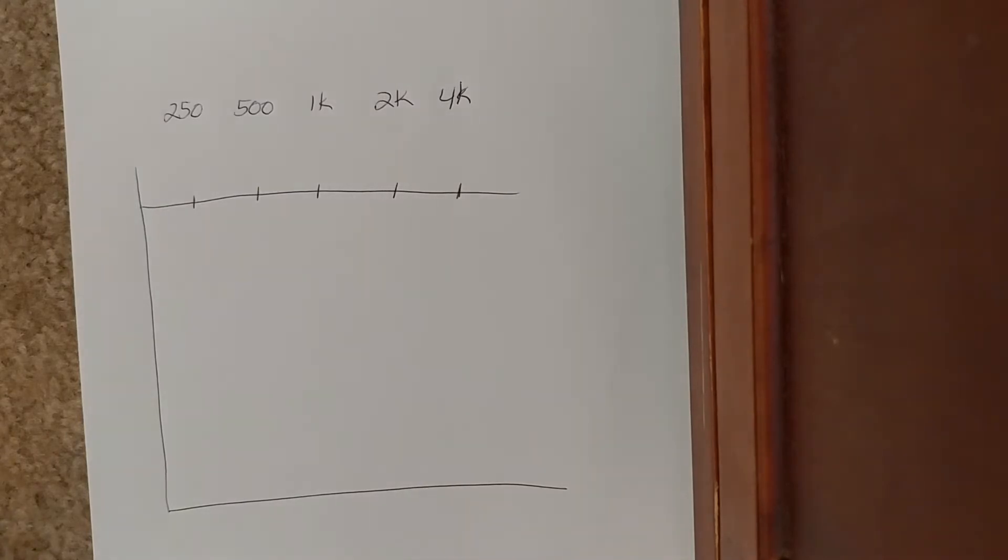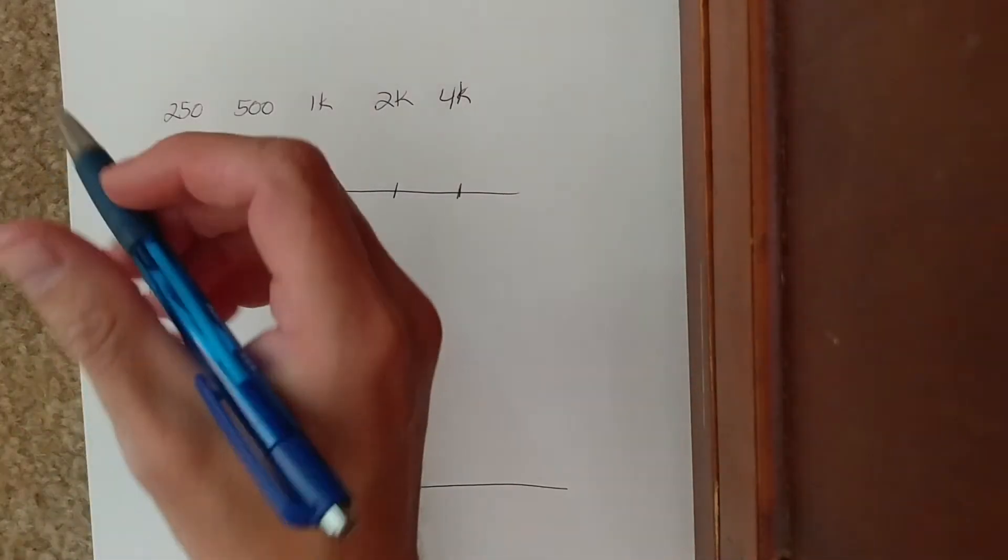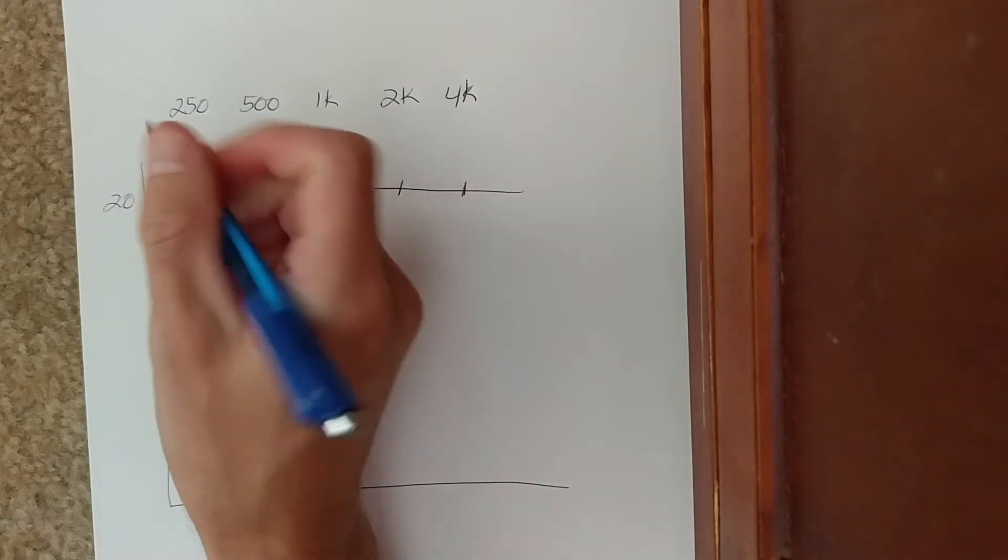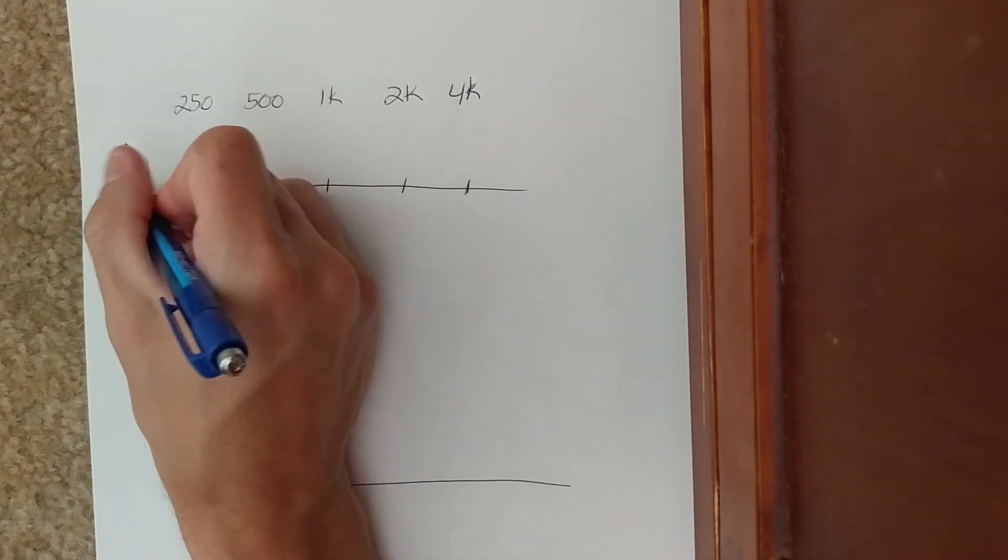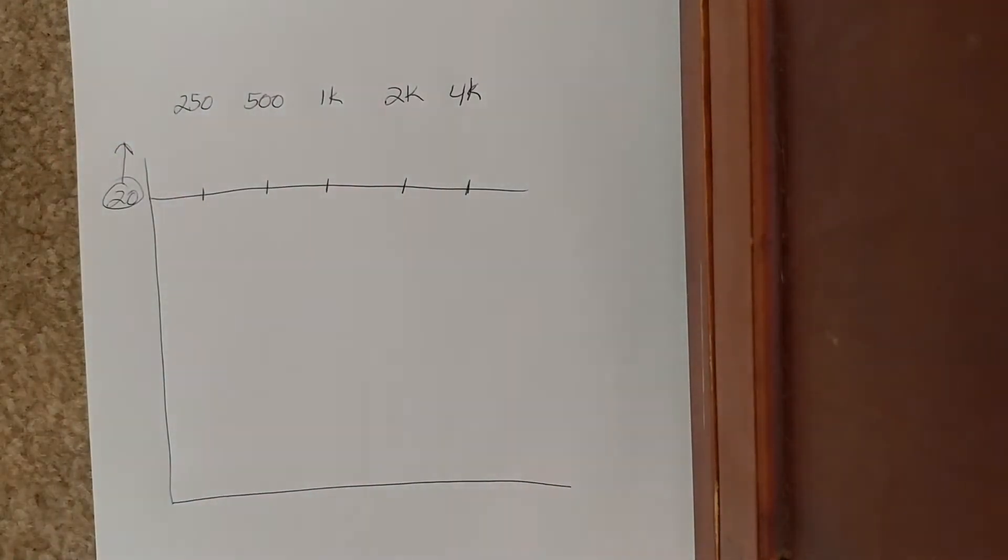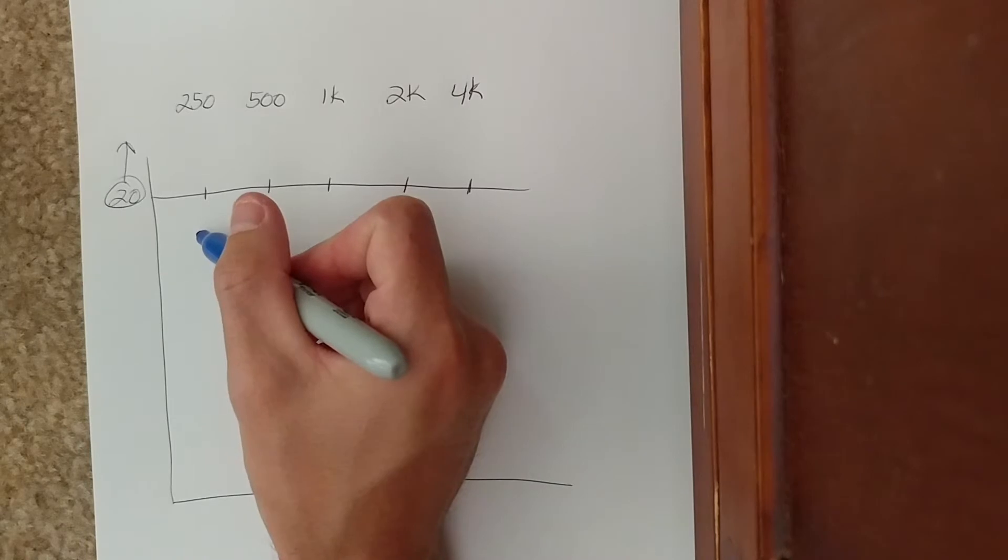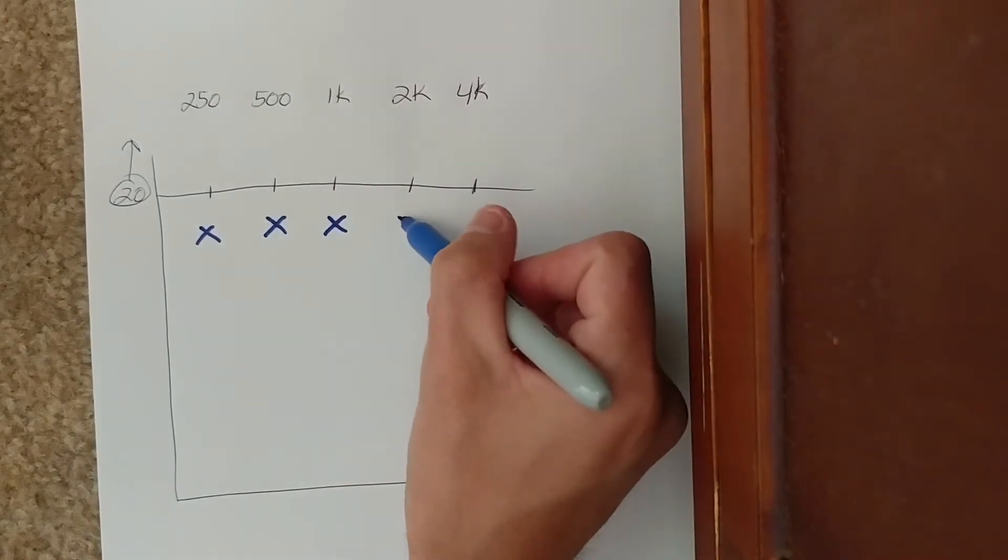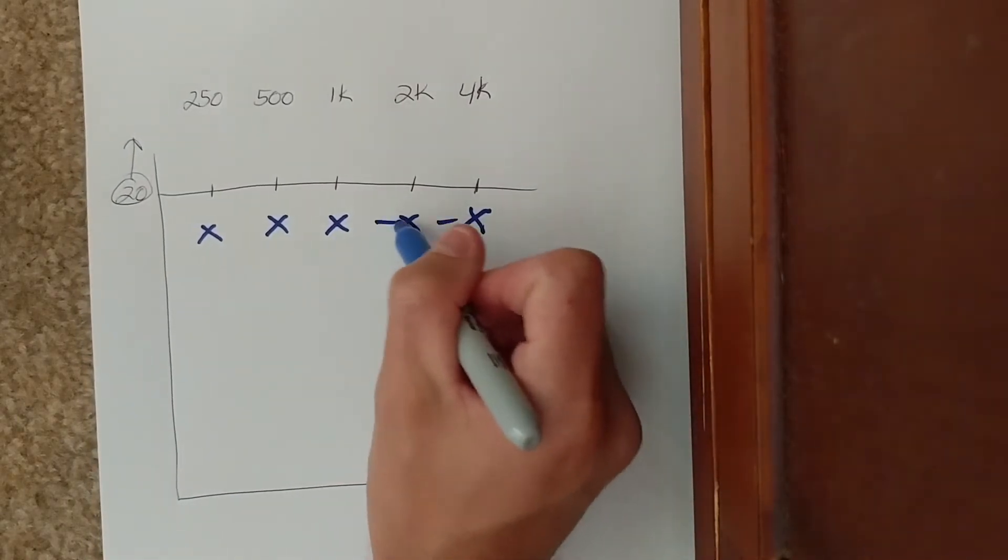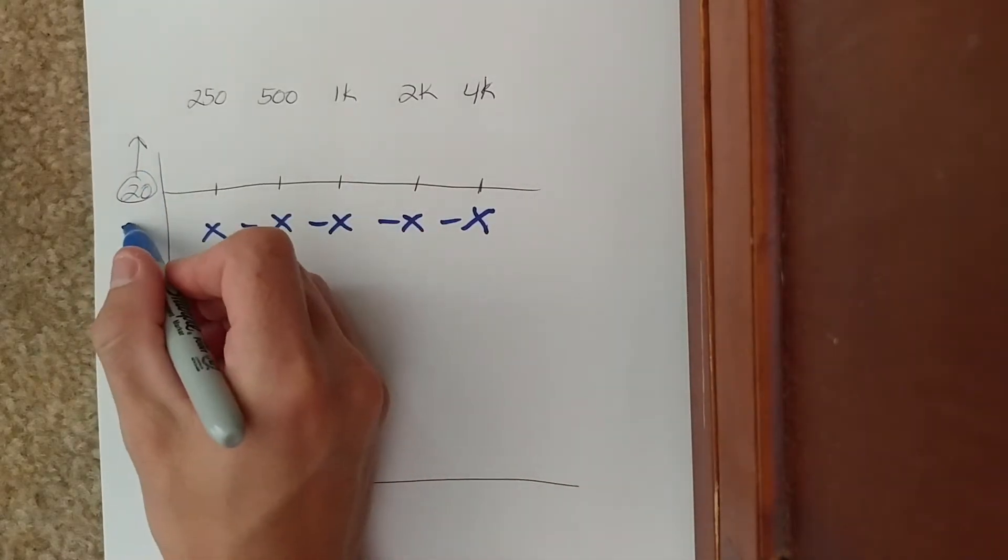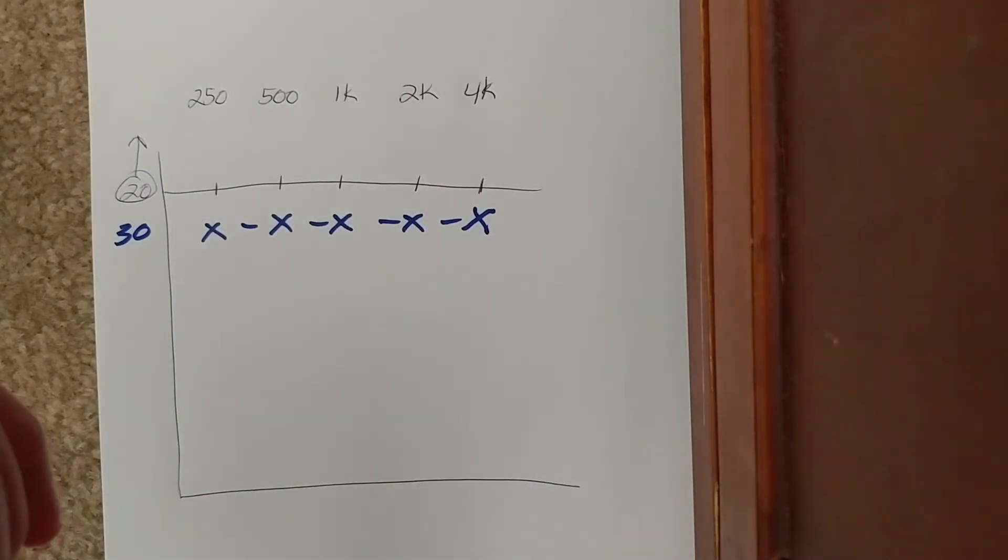The first thing is I'll make a simplistic audiogram just to try to get the point across. Let's say this is 20 decibels, so this and above is normal. And let's say that I'm going to plot my left ear and my left ear is a flat hearing loss at 30 decibels across.